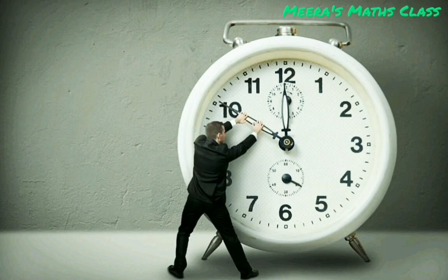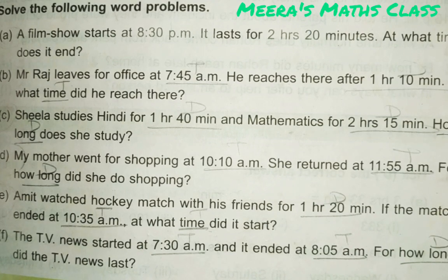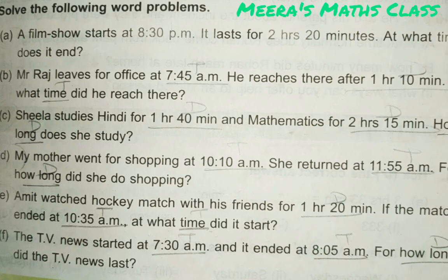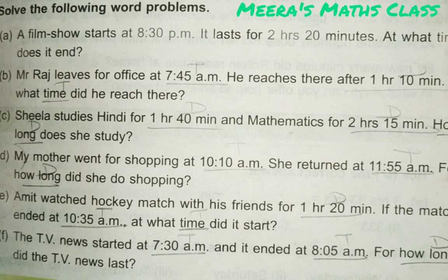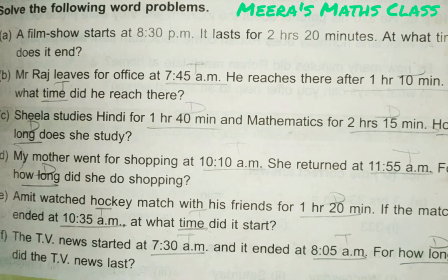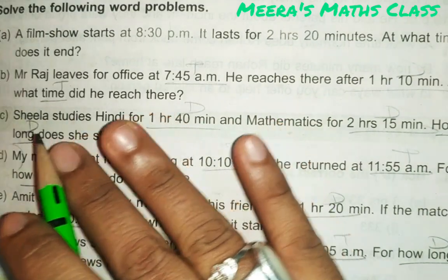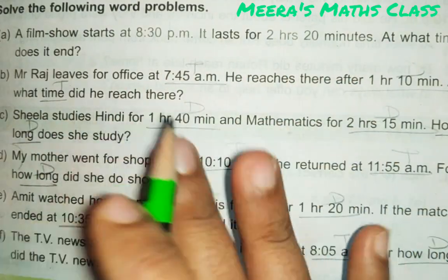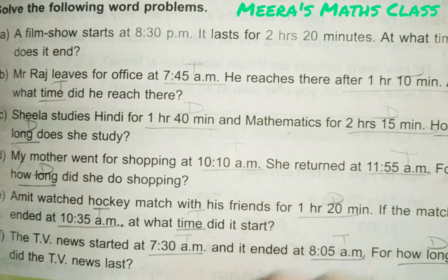Welcome to Mira's math class. Now, dear children, we are going to look at word problems on the time chapter. As I told you, there are two types of time: one is exact time and the other is duration. First, you have to read the word problems and identify which one is the time and which one is the duration.